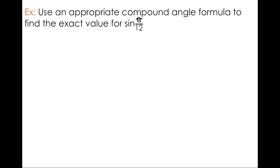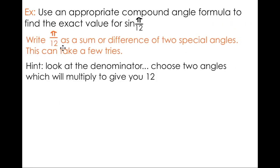So, let's look for two angles, special angles, that when added or subtracted give me pi over 12. Now, this can be a challenge and sometimes it takes a few tries. In this case, I find it's helpful to start with angles whose denominators multiply to give 12.